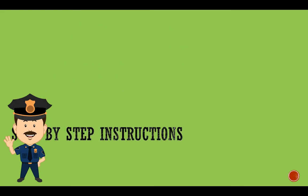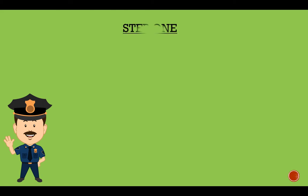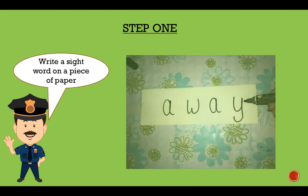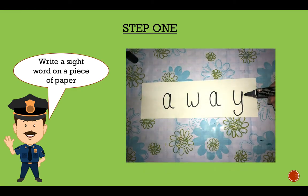The first step. I'm going to teach you how to play this game at your home. Step one. You're going to write a sight word on a piece of paper. So you're going to pick one of the sight words that we've learned. You can use the sight word list just like the picture shows. Make sure you leave some space between your letters.